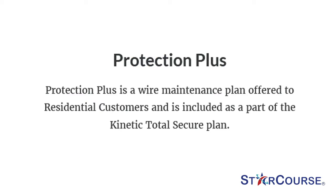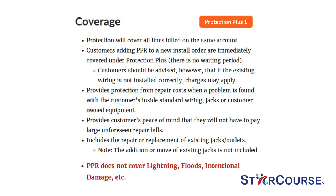Protection Plus coverage: protection will cover all lines built on the same account. Customers adding PPR to a new install order are immediately covered under Protection Plus. Customers should be advised, however, that if the existing wiring is not installed correctly, charges may apply. Provides protection from repair costs when a problem is found with the customer's inside standard wiring, jacks or customer-owned equipment, giving customers peace of mind against large unforeseen repair bills. Includes the repair or replacement of existing jacks and outlets. Note: the addition or move of existing jacks is not included. PPR does not cover lightning, floods, intentional damage, etc.